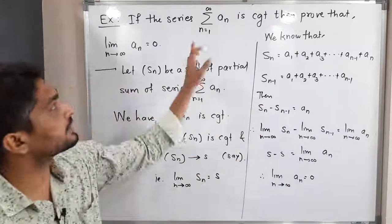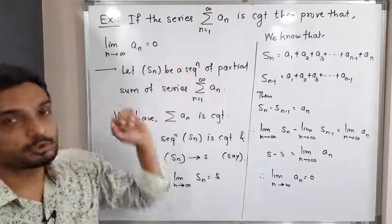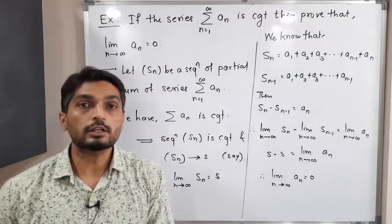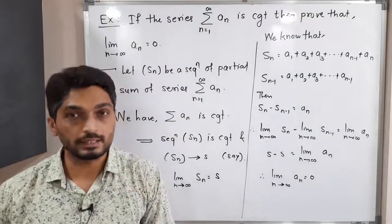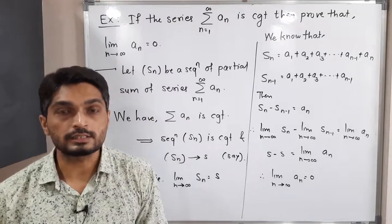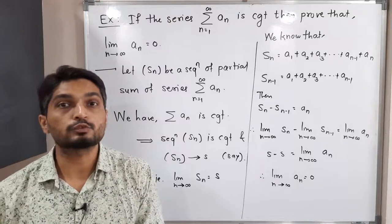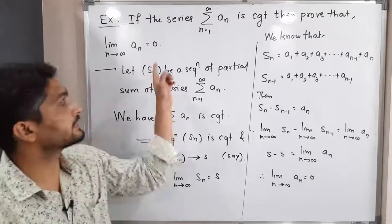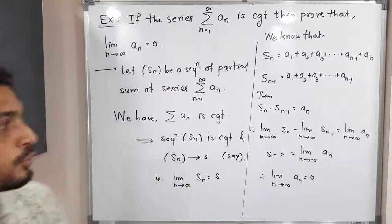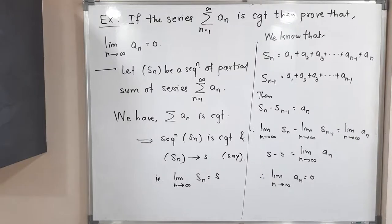So in this way we have proved this result. Our conclusion is: if the given series summation a_n is a convergent series, then the limit as n tends to infinity of a_n is equal to 0. Proof is complete.